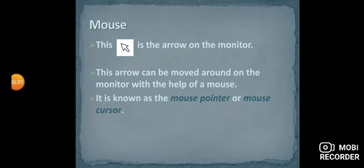Next we have this arrow on the monitor. You can see here in this picture, this is an arrow. This arrow can be moved around on the monitor with the help of a mouse. It is known as mouse pointer or mouse cursor.